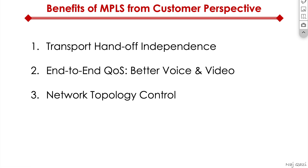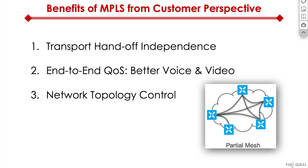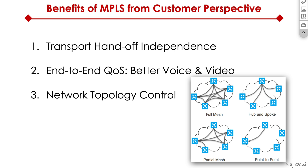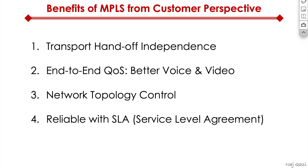You also have better network topology control. MPLS lets you do point-to-point, hub-and-spoke, partial mesh, or full mesh — you are fully in control. The only drawback is you have to work with your service provider to make that happen. You cannot create your own topology; your service provider has to create it for you on their provider edge router. So it's very important that you talk to your service provider about that ahead of time.